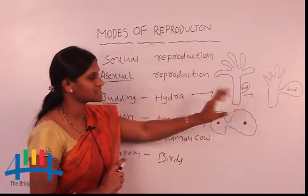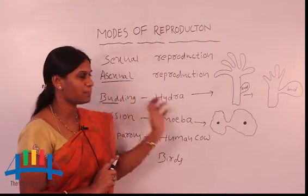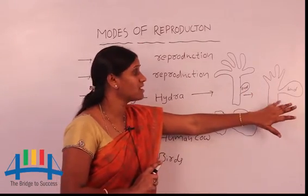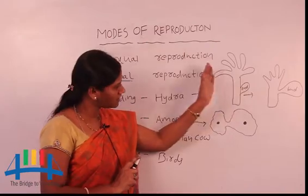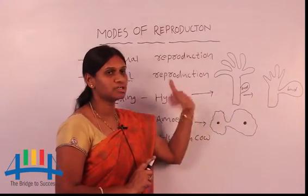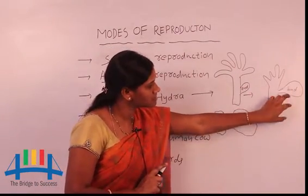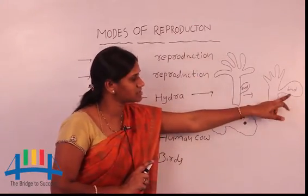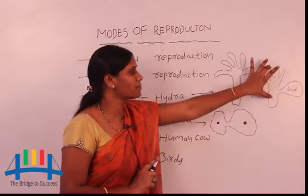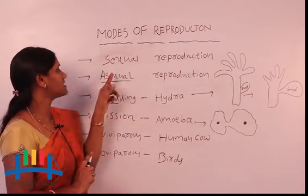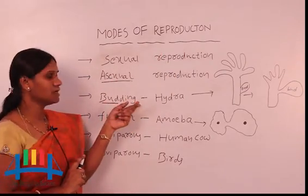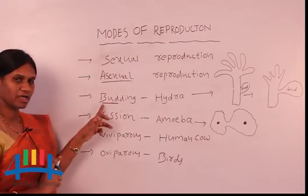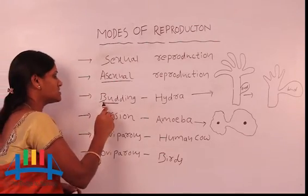Commonly, one small bud-like structure arises or appears on the body of hydra. It will grow — it takes only a few hours. Within hours, the hydra produces daughter hydras through the bud. The small bud grows larger and takes the shape of a hydra. So that is asexual reproduction in hydra through budding — one way of asexual reproduction in lower animals.